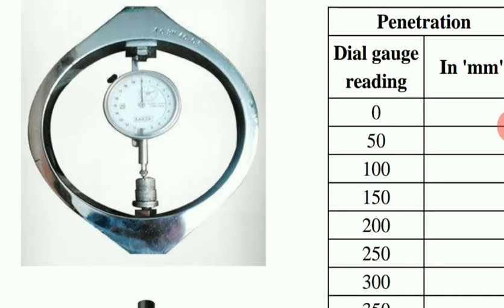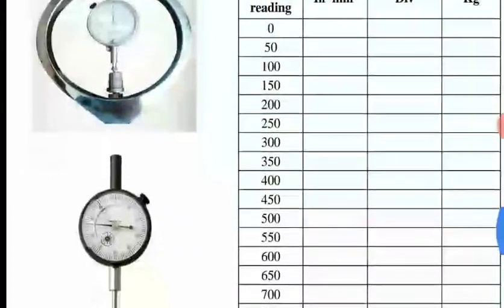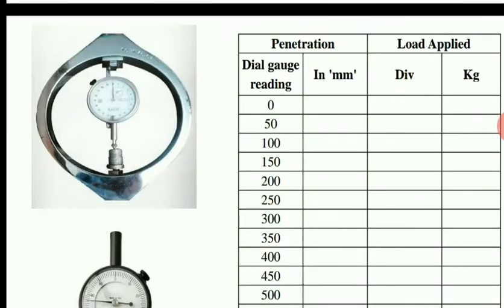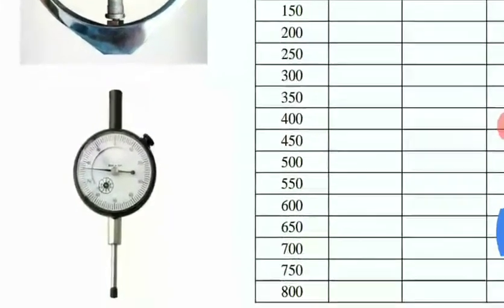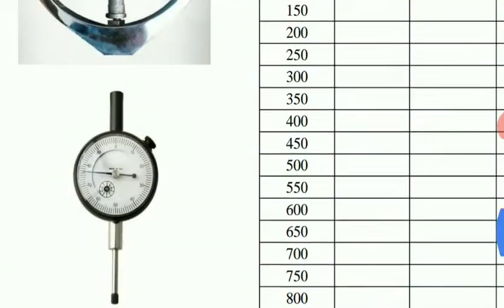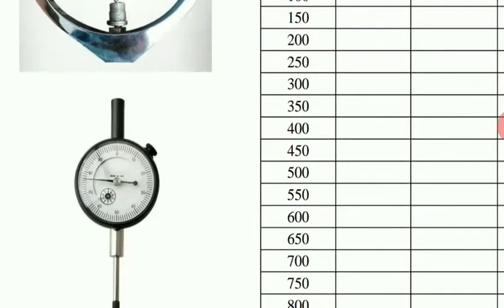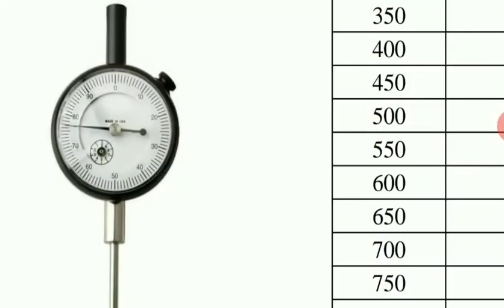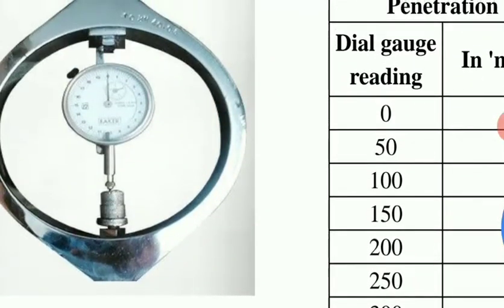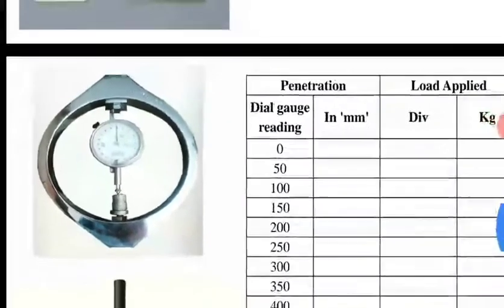As per the dial gauge readings, we consider the corresponding proving ring readings. The dial gauge readings are fixed: for every 50 dial gauge units we record the corresponding proving ring reading. So 50 dial gauge readings corresponds to 0.5 mm penetration, and 100 corresponds to 1 mm penetration. For every 0.5 mm and 1 mm penetration interval, we take the corresponding proving ring readings.